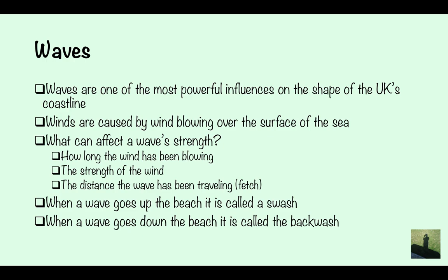Waves are one of the most powerful influences on the shape of the UK's coastline. Waves are caused by wind blowing over the surface of the sea. What can affect a wave's strength: how long the wind has been blowing, the strength of the wind, and the distance the wave has been travelling — this is called the fetch. When a wave goes up the beach it's called swash, and when it goes back down the beach it's called backwash.